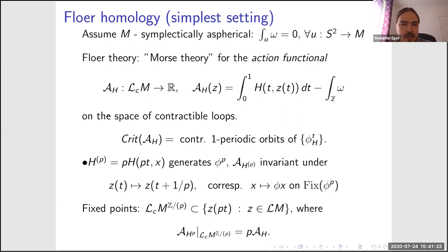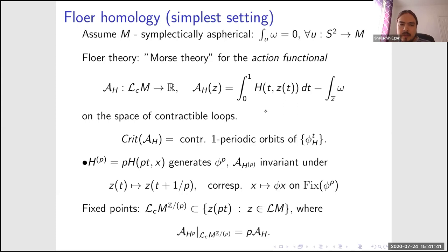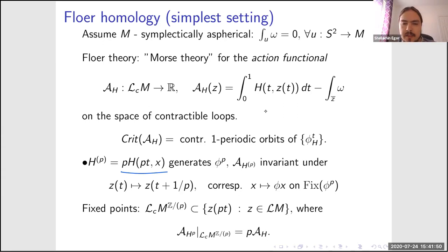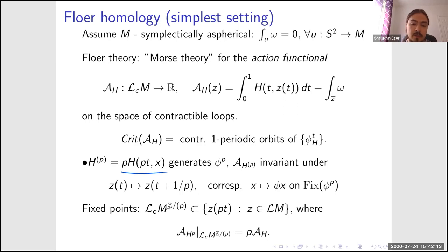In the symplectically aspherical case, Floer theory is a Morse theory for the action functional on the space of contractible loops. Its critical points are contractible one-periodic orbits of the Hamiltonian flow. Consider the Hamiltonian to be one-periodic in time, iterate it p times, and rescale. The action functional of this rescaled Hamiltonian — which generates φ composed p times — is invariant under a Z_p action on the contractible loop space sending z(t) to z(t + 1/p).